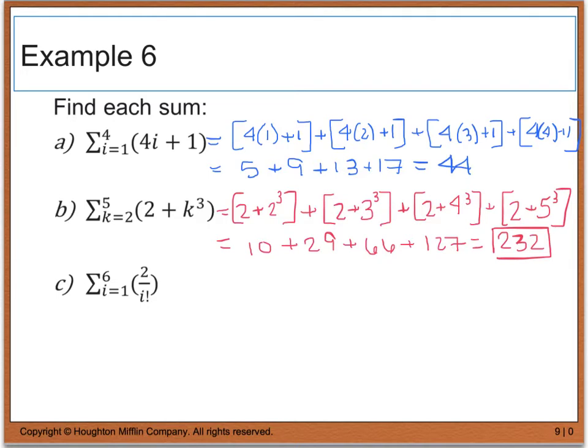Finally, for part c, I'm going to take and evaluate my summation from 1 to 6. So this is going to give me 2 divided by 1 factorial, plus 2 divided by 2 factorial, plus 2 divided by 3 factorial, plus 2 divided by 4 factorial, plus 2 divided by 5 factorial, plus 2 divided by 6 factorial.